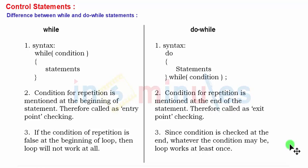Second, for while statement, the condition for repetition is mentioned at the beginning of the statement, and therefore it is called entry point checking. When the program enters the while, that time only checking is done. So it is entry point checking.